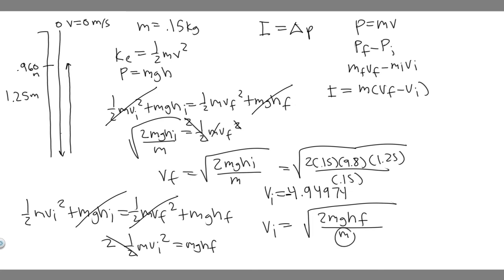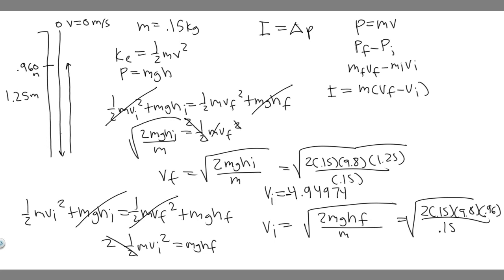Solving the same way: v = √(2gh_final). Plugging in: √(2 × 0.15 × 9.8 × 0.96 ÷ 0.15) = 4.337 m/s. This is v_initial in the sub-problem but v_final in the whole problem. Since it's going upward, it's positive: v_final = +4.337 m/s.